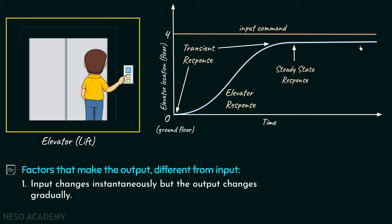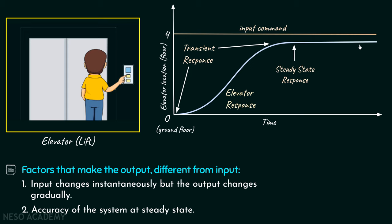There is one more factor that can make the output differ from the input in the steady state of the system, and this is the accuracy of the system at steady state. In our example, this corresponds to the floor leveling accuracy of the elevator. When we push the fourth floor button, we desire the elevator to be exactly in front of the fourth floor level, but in response the elevator is slightly below that level. This difference between the actual response and the desired response is the steady state error. In some cases steady state errors are acceptable, but in many cases they must be reduced using certain system configurations.